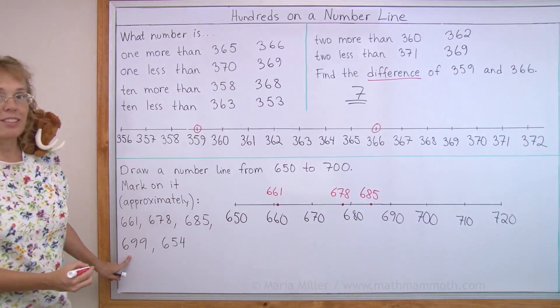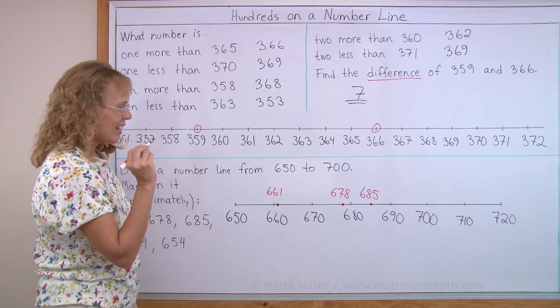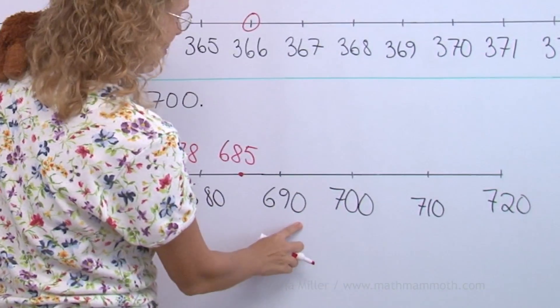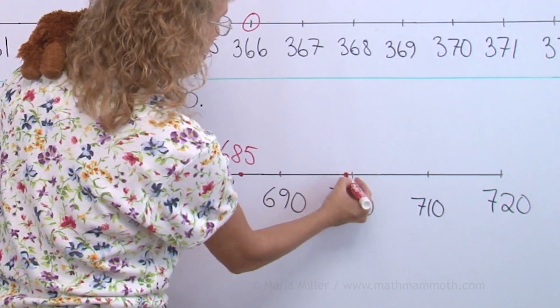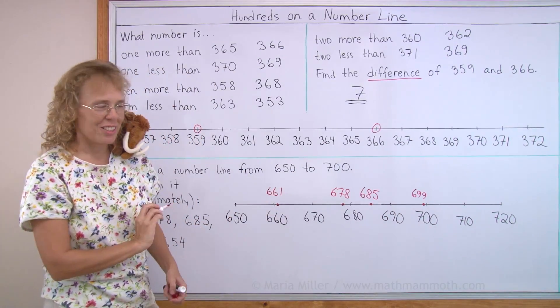And then 699, okay, 690, and then there would be 1, 2, 3, 4, you know, all the way till 9 would be here, 699, just before you get to 700.